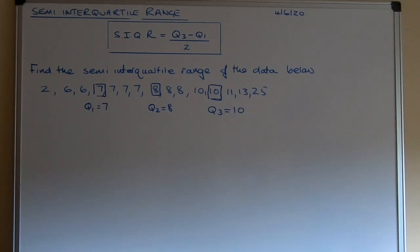Semi-interquartile range is Q3, the upper quartile minus Q1, the lower quartile divided by two. So first of all you've got to find these quartiles.